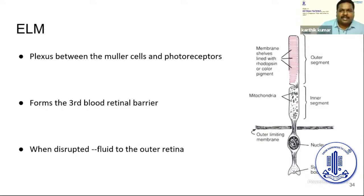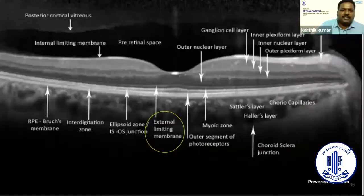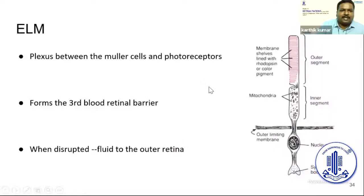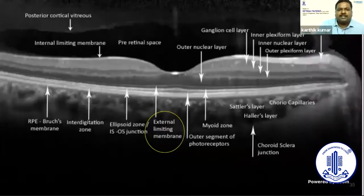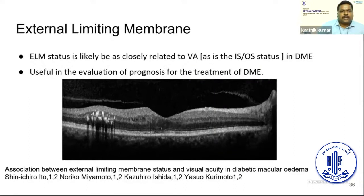The external limiting membrane (ELM) is the junction between the Müller cells and the photoreceptors and acts as the third blood-retinal barrier. When the ELM is disrupted, fluid enters the outer retina. ELM status is closely related to visual acuity in DME and is used for prognostication. Disruption of the ELM is associated with definitely poorer vision.